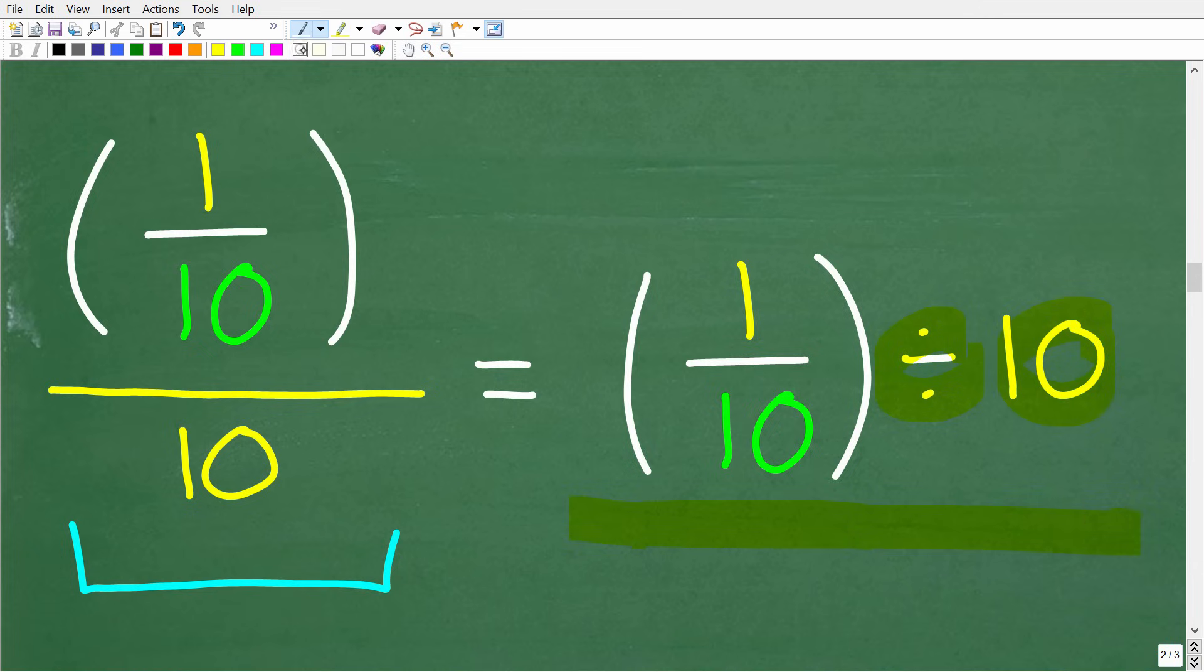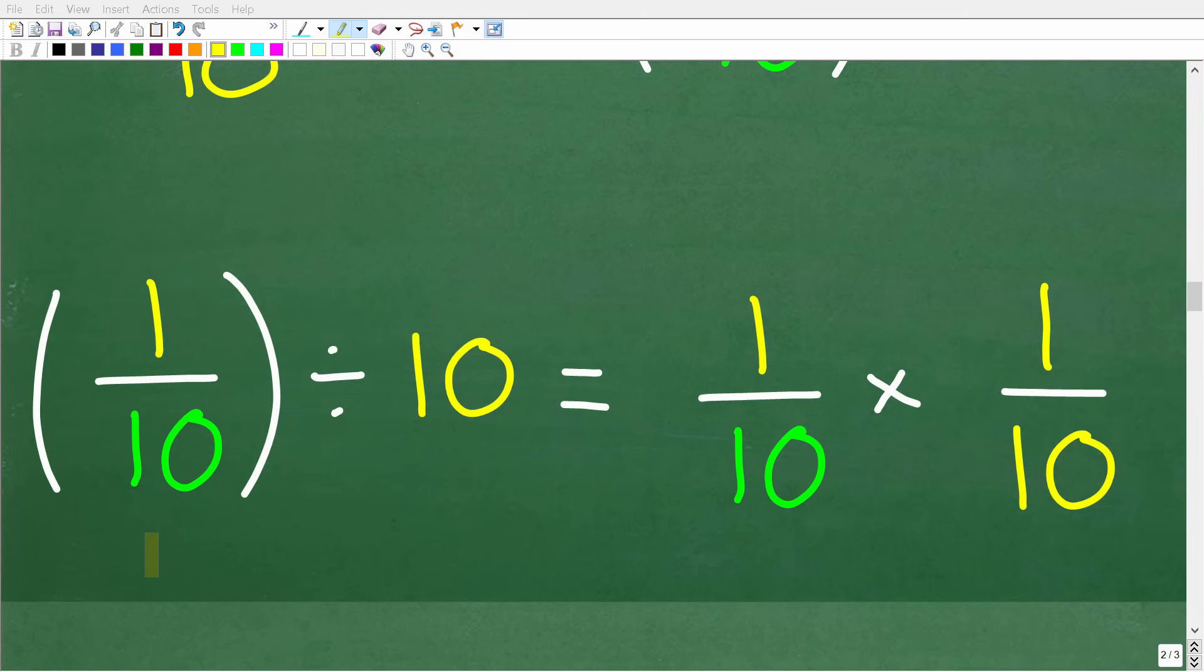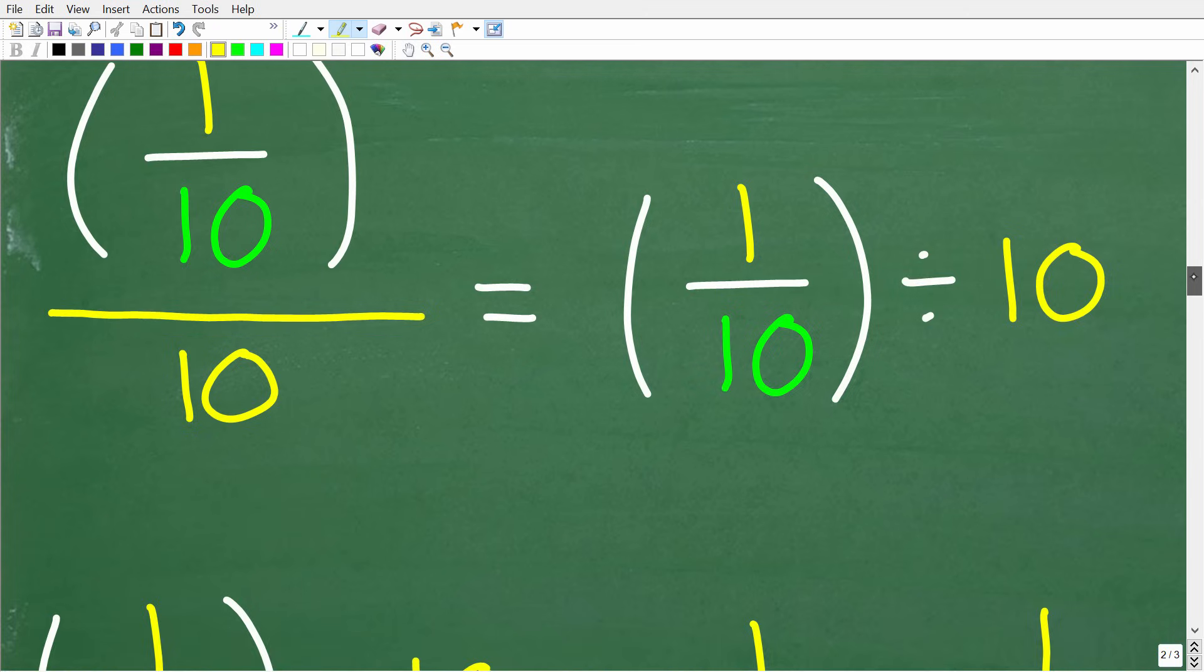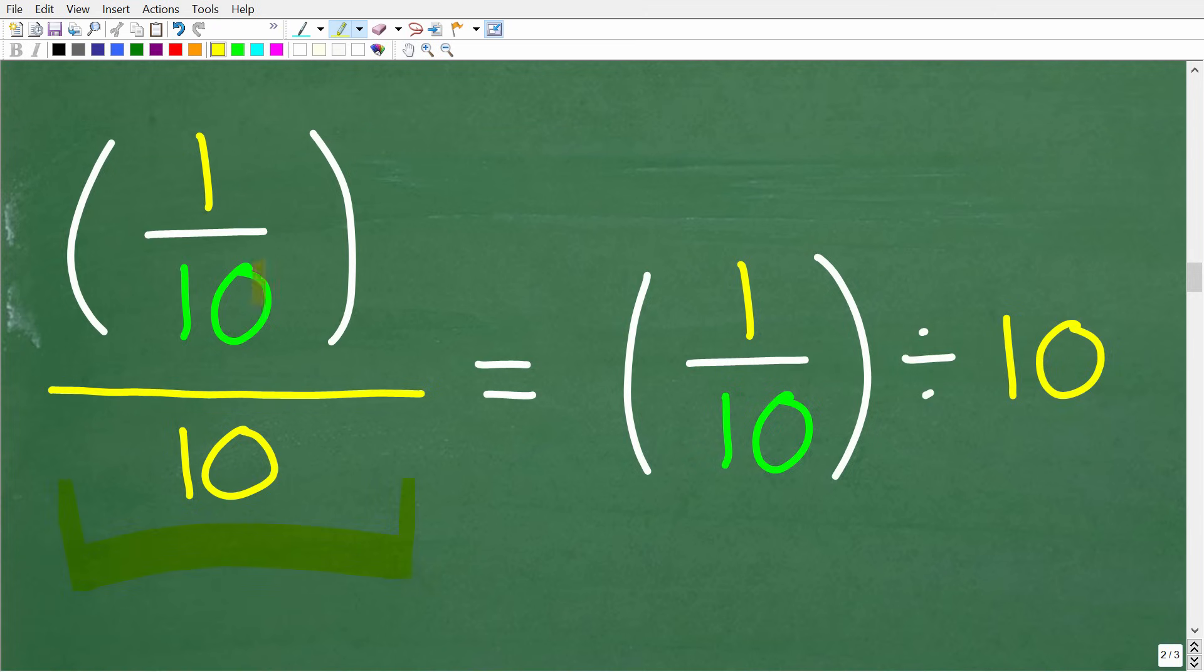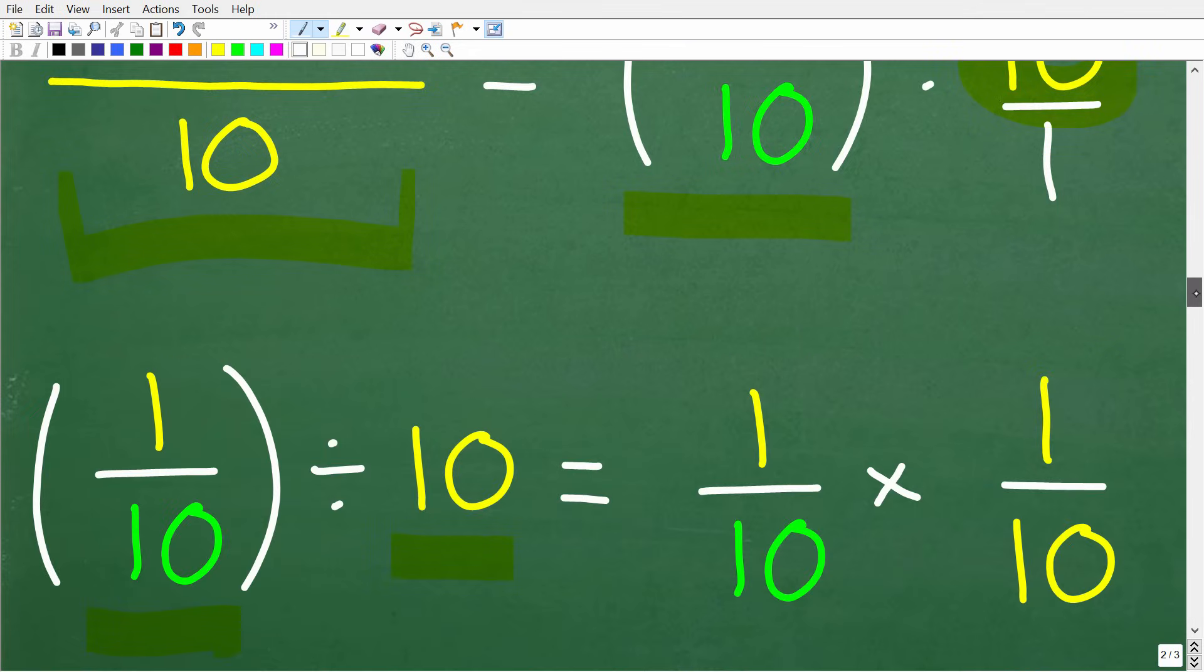All right, so at this point, all we have to do is do some basic fraction division, and we will be done with the problem. So how do we divide fractions? Well, this is very easy. Okay, so we have 1 tenth divided by 10. Now, again, we can write this problem as a complex fraction, 1 tenth divided by 10, or we can express it this way, 1 tenth divided by 10. Now, what we want to do is think of this 10 as a fraction. So anytime you have a number and you want to think of it as a fraction, simply put it over 1. Okay, so how do we divide fractions?